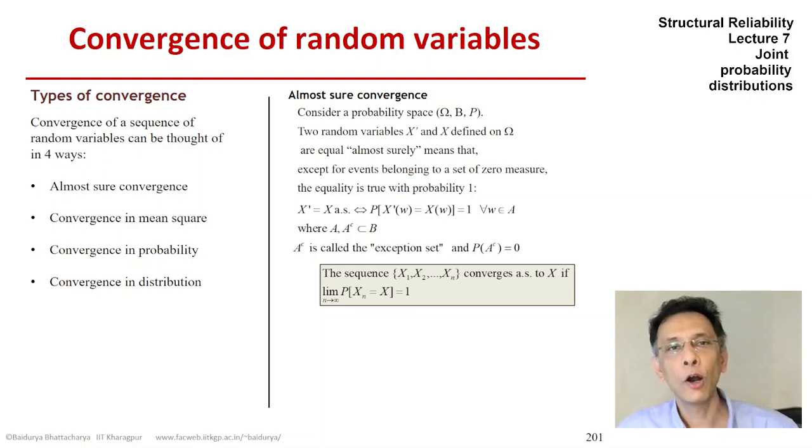So if we extend that idea to the sequence of X1, X2, up to Xn, then that sequence converges to the random variable X almost surely if in the limit the probability that Xn equals X is exactly equal to 1.